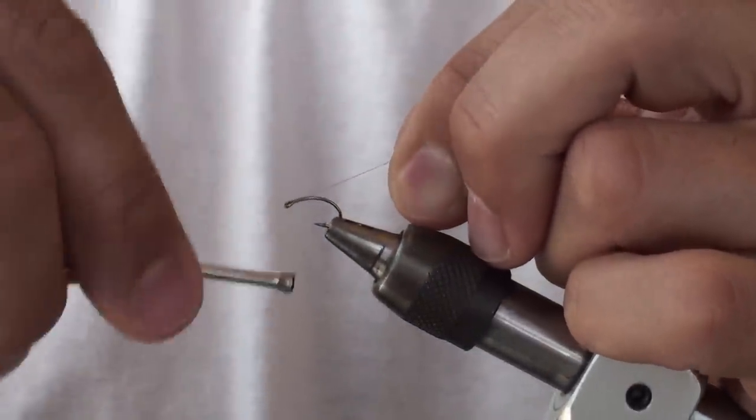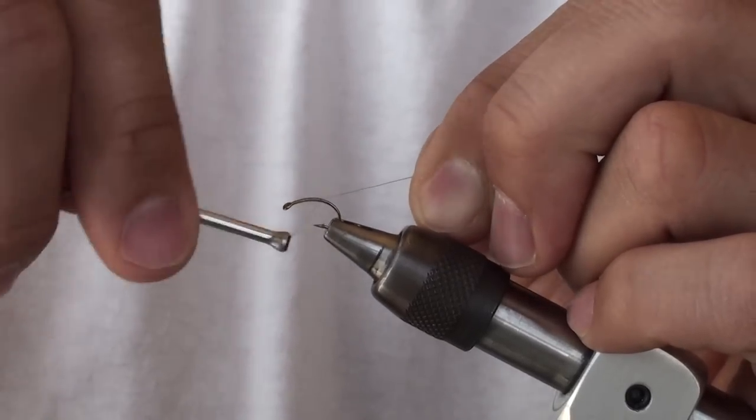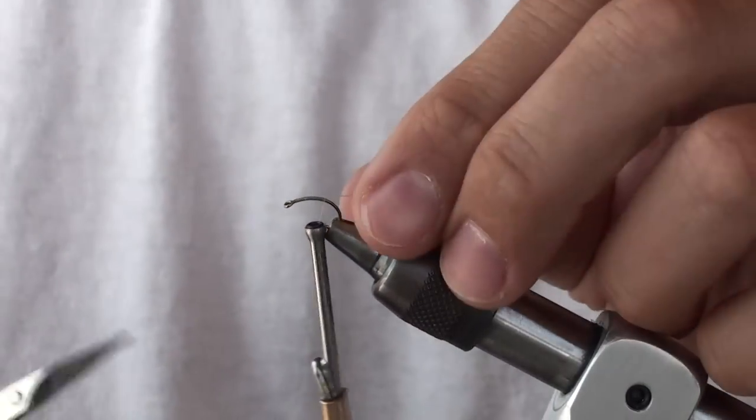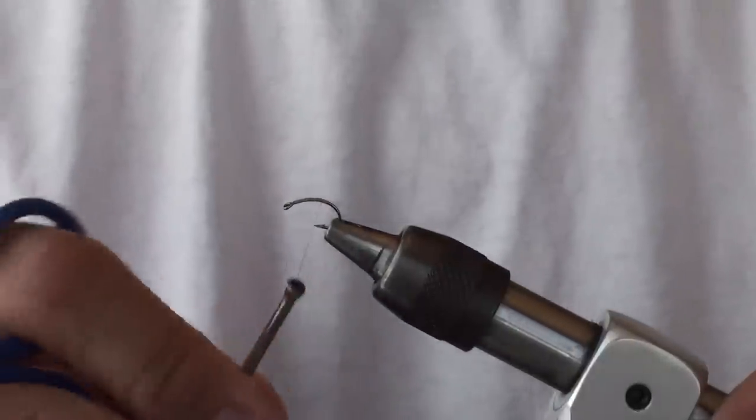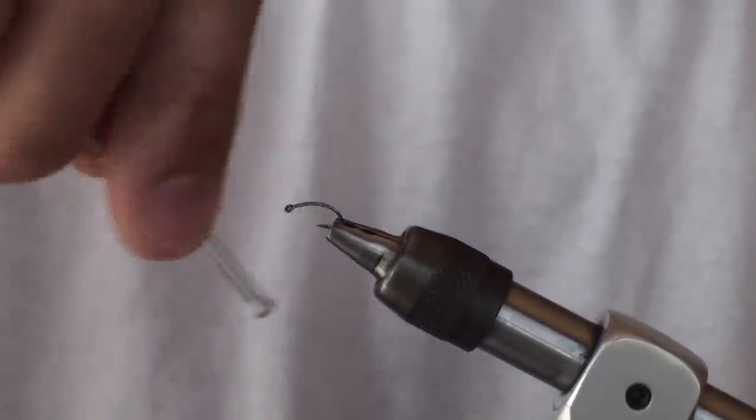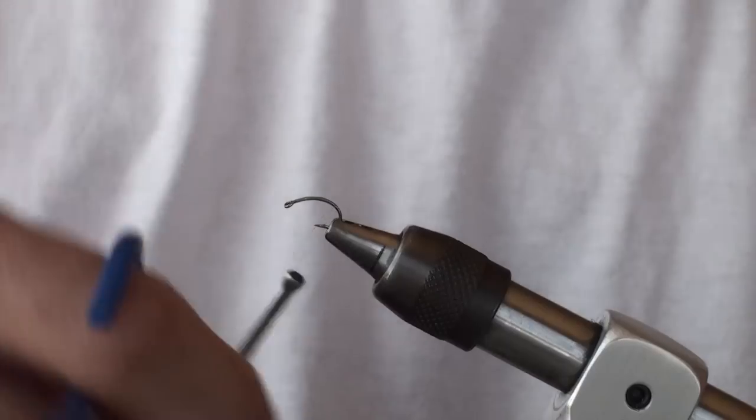Tying that on, working my thread back towards the hook point and clipping off excess thread. Continue working that back, just building a thread base well into the bend of the hook.